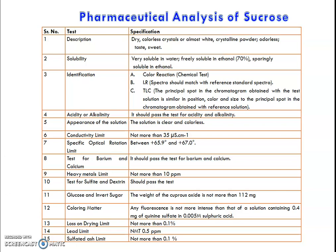Followed by the acidity and alkalinity test — it should pass the test for acidity and alkalinity. The solution should be clear and colorless with respect to appearance. Coming to the conductivity limit — it should not be more than 35 microseconds per centimeter. The specific optical rotation measured for sucrose should be between +65.9 degrees and +67.0 degrees.